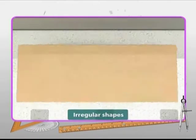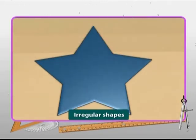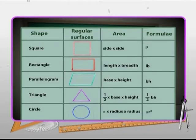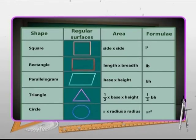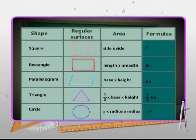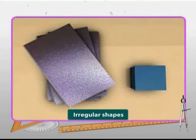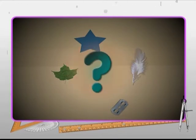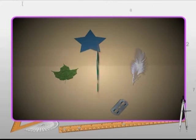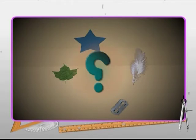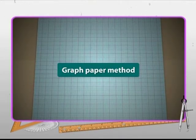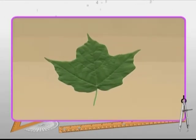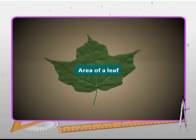In your daily life, we come across various shapes. Area of some of these shapes can be obtained by using direct mathematical formulae, like those of our rectangles and squares. However, there are many other shapes like the one shown on the screen, whose area can be computed only by using graph paper method. One such shape is the leaf. So now let's find the area of a leaf using this method.